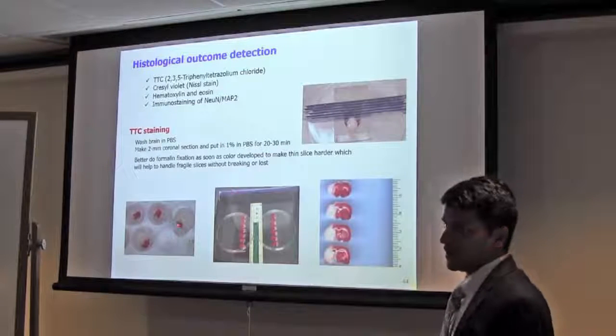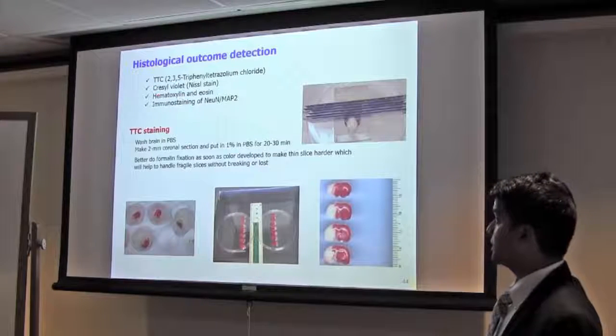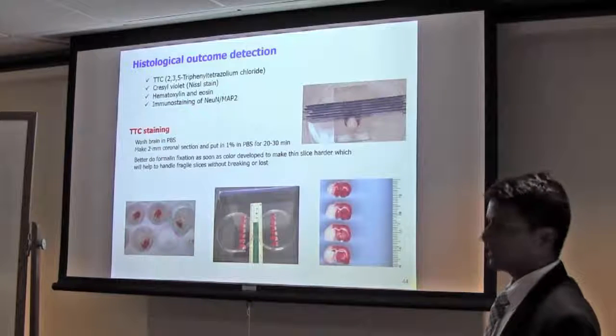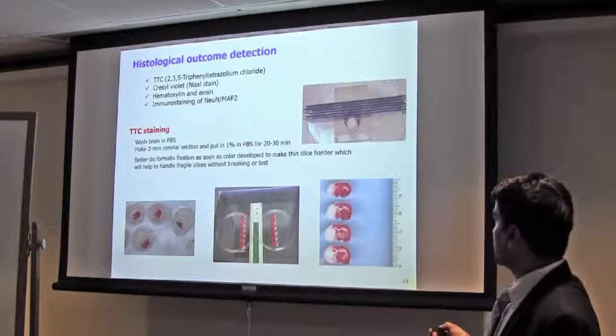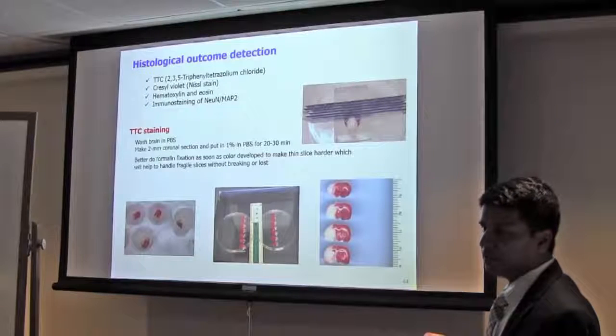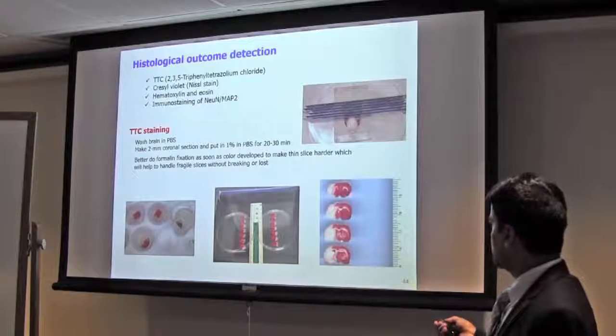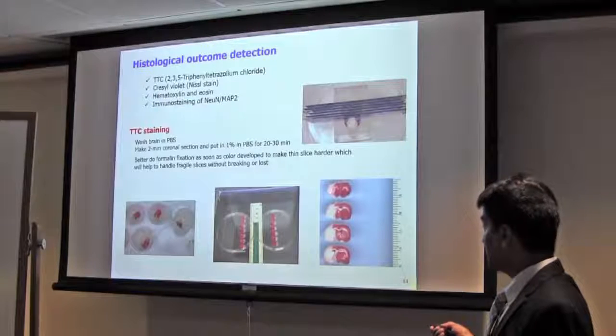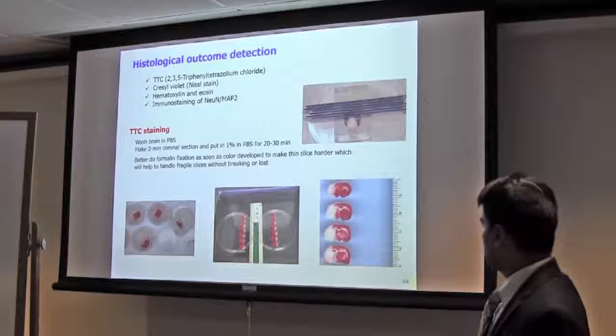How will you evaluate the outcome of the MCAO stroke model? You can do by TTC staining, cresyl violet staining, or immunostaining with NeuN or MAP2. The most common and popular one, the very simple one, is TTC staining. It's a kind of salt, which is clear when in solution. When you put with ischemic tissue, the tissue which is viable has mitochondria and mitochondrial enzyme dehydrogenase. It will convert the TTC salt to a colored product. So which cells are alive, they will be red color. Where there are dead cells, they cannot do anything with the salt, so it will remain white.